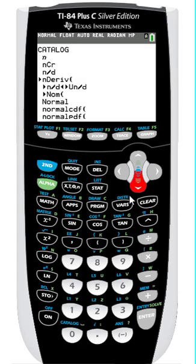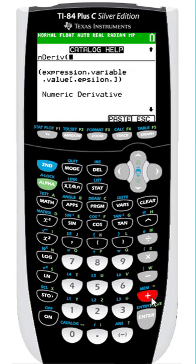To access the help functionality, highlight any function in the Catalog and then press the plus key. I can see the color of the status bar change to green, and I'll jump into the help.